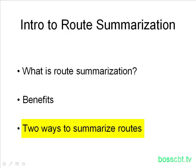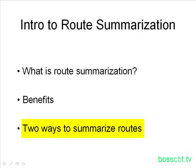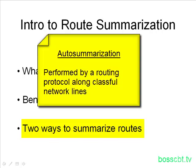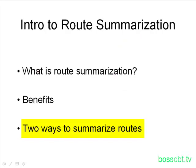The first way is manual summarization, meaning you as a network administrator are given the ability to log into the router and configure manually how you want summarization to work. The other way is auto-summarization, where the summarization is performed by the routing protocol itself, usually done along classful networks. The manual approach gives the engineer a lot more control over what routes to summarize, whereas auto-summarization doesn't give as much control and is usually done along classful network lines.